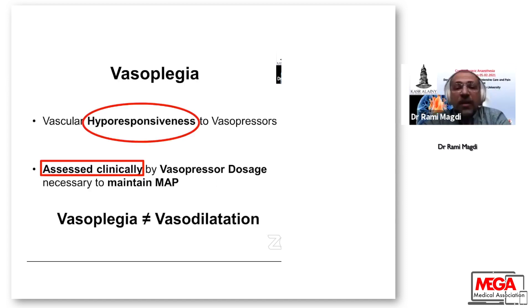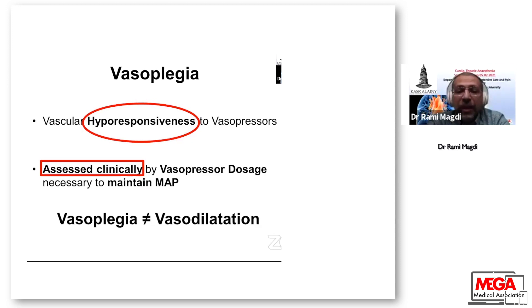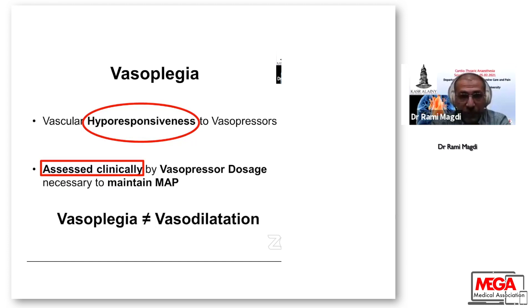Vasopressia is vascular hyporesponsiveness to vasopressors. It is assessed clinically by the vasopressor dose needed to maintain mean arterial pressure. It is important to note that vasopressia is not vasodilatation.